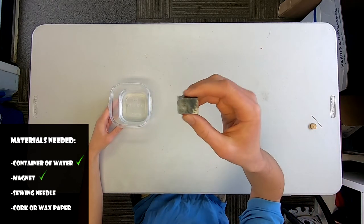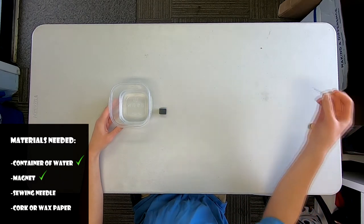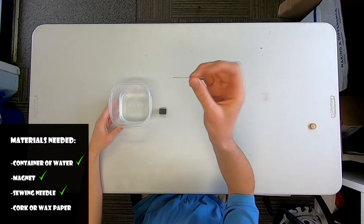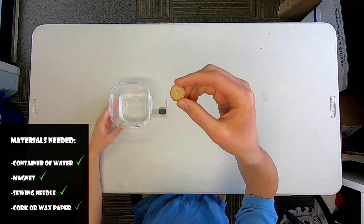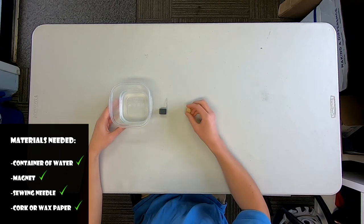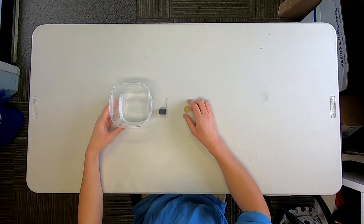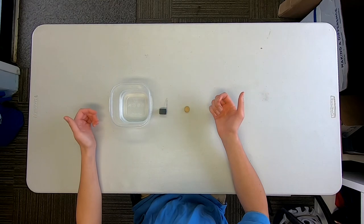You're also going to need a magnet. The next thing that we want is a sewing needle. And lastly, a cork. You can cut the cork so that it's small like this. If you don't have a cork, that's okay. You can also use a piece of wax paper. You just want to make sure that it's strong enough to be able to support the weight of the needle while still floating in the water.